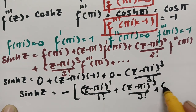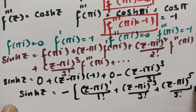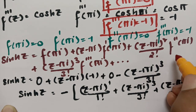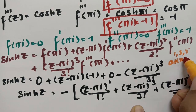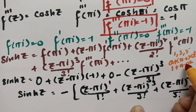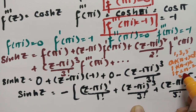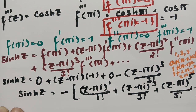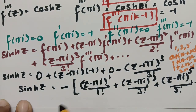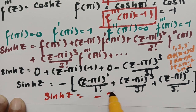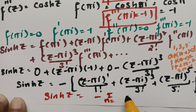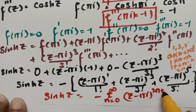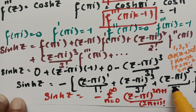Taking out the minus sign and continuing the pattern with odd powers 1, 3, 5, ..., we can write: sinh(z) = -Σ (z - πi)^(2n+1) / (2n+1)!, where n goes from 0 to infinity. The exponents 2n+1 generate odd numbers 1, 3, 5, 7, ... as required.